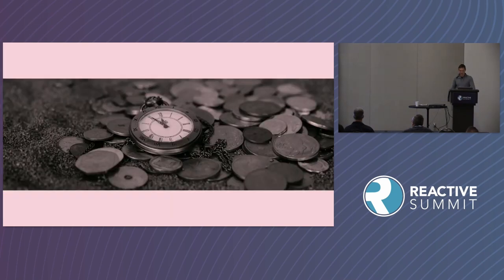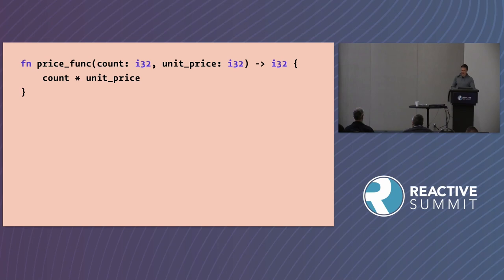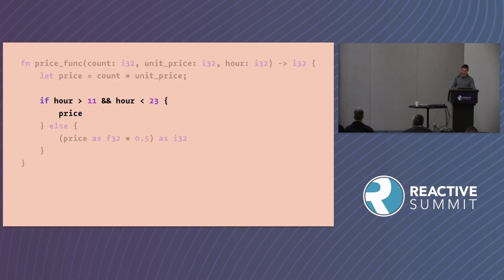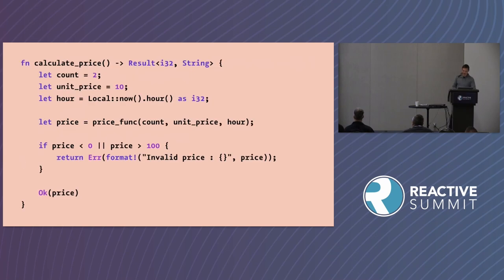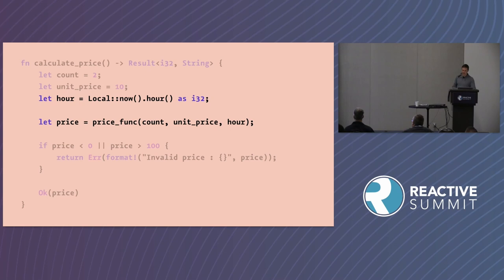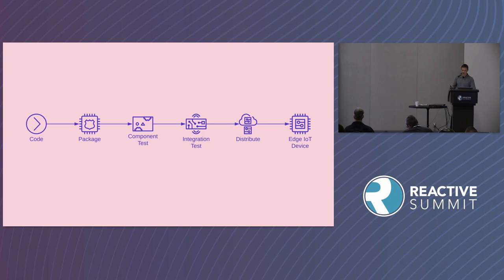Let's see what it actually takes to make a code change. We want to discount prices during off-peak hours — from 11 p.m. to 11 a.m., we'll charge half price. So we modify the price function to return the full price during peak hours and half the price during off-peak hours. The function to calculate the price then needs to consider the hour of the day and pass that into the price function. And then we need to go through the whole process again: build, sign, package, integration test, and distribute to IoT devices around the world — all for that minor code change.